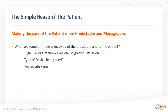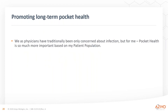In life, we always want to make what we do more predictable and manageable, and that's the key with patients with devices. We're trying to make it more predictable — we don't want surprises. We want to ensure the patient doesn't have long-term complications. So, what are some of the risks involved? Obviously, we always think of the high risk of infection, but there are other factors we need to focus on as well: erosion of the device, migration of the device leading to possible revisions, the types of devices used, and pocket pain. We as physicians have traditionally been only concerned about infection, but for me, pocket health is so much more important based on my own patient population.